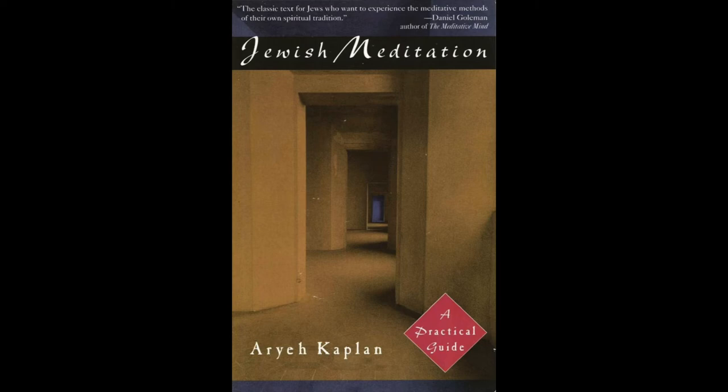One way to hew away surrounding imagery is to replace all mental images other than the Aleph with pure white. First, focus on the Aleph, allowing it to fill the mind. Then gradually hew away the images around the Aleph, replacing them with white fire. Imagine the white fire burning away the other images. Begin with a small spot of white fire at the top of the Aleph, let it expand, burning away larger and larger areas on all sides. Finally, one sees the Aleph alone, written in black fire on white fire.